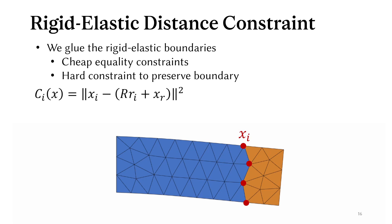So our constraint itself is simple, it's really just forcing a zero distance between the elastic vertex and its corresponding position within the rigid body. Here xi is the elastic position, xr is the position of the center of mass, big R times ri is a vector from the center of mass to the boundary vertex, we just want the tip of that green arrow to exactly match the elastic position.